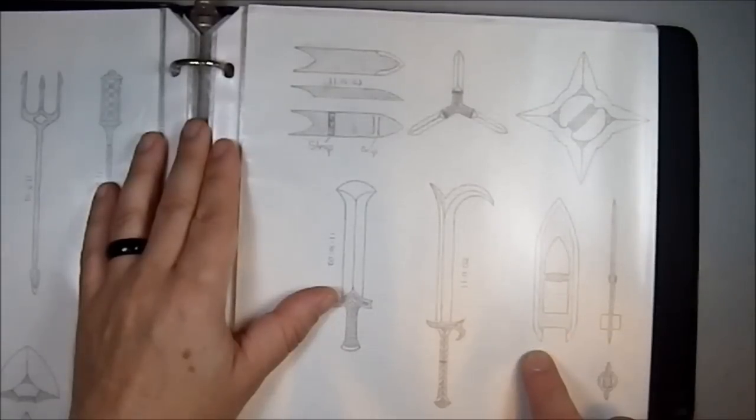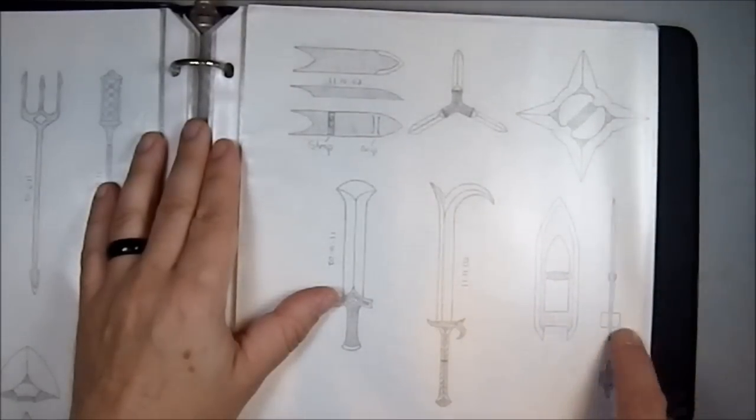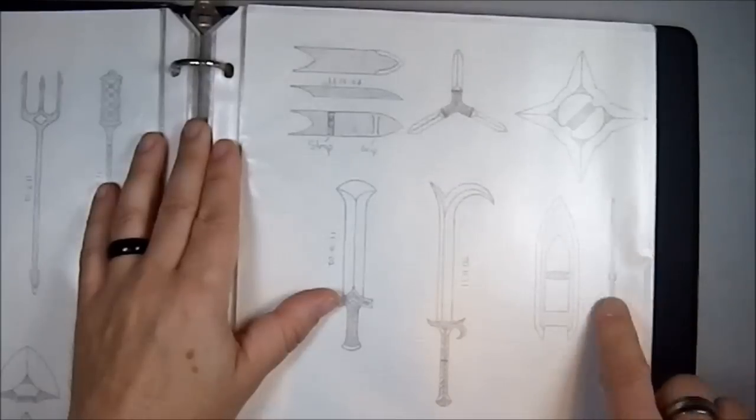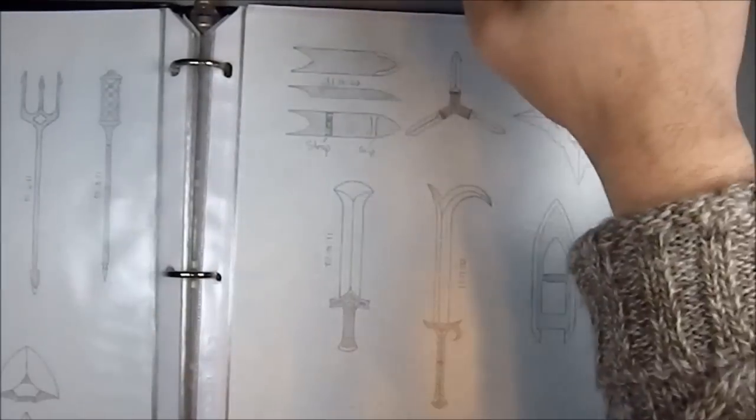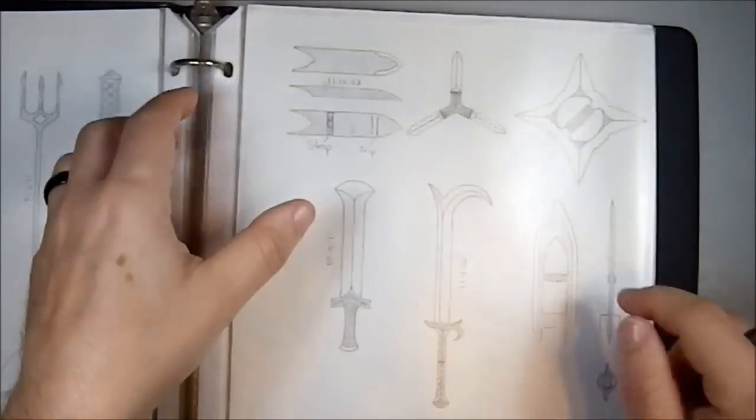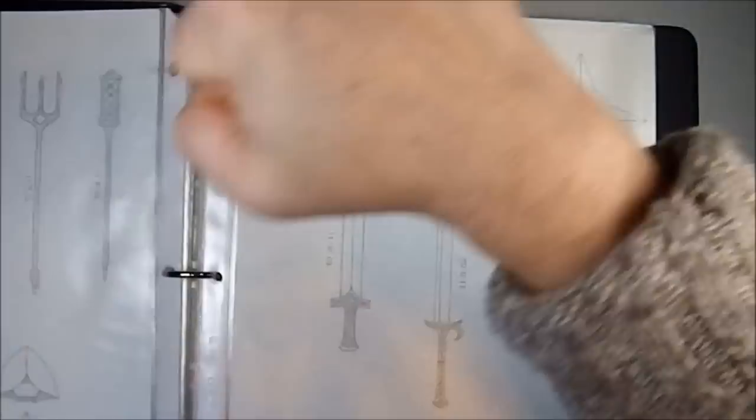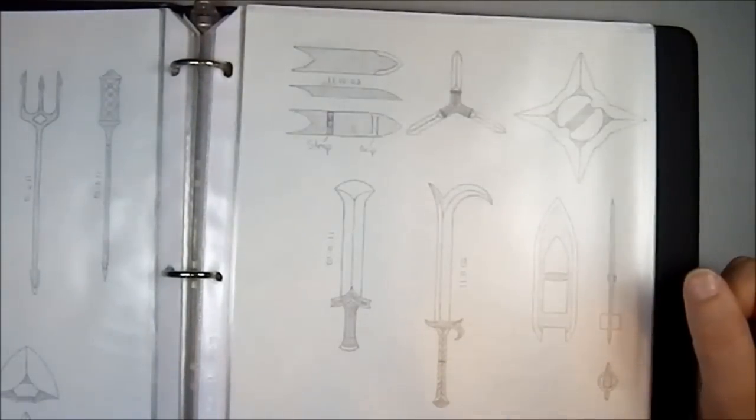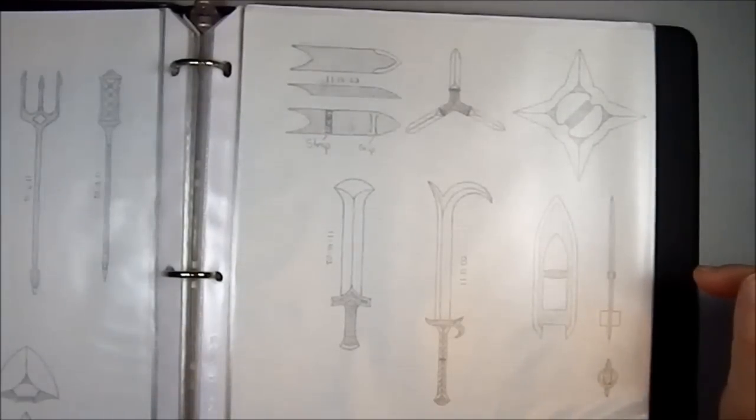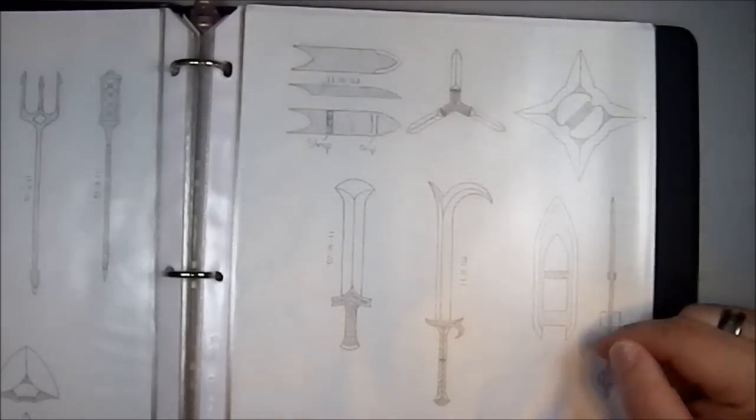Here we have another forearm weapon. Your arm comes in here, you grip it here, and there's a collar. You put your entire arm in and it hugs the forearm. You're holding here and it makes your entire arm into a slashing and piercing weapon. It would be something to get used to but I think it could be effective. I'd actually like to see that made in real life.